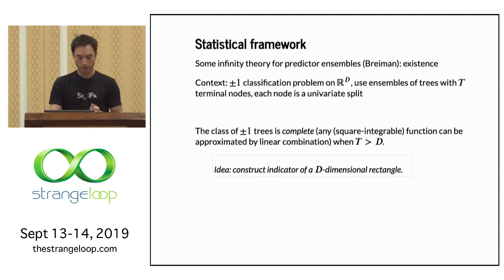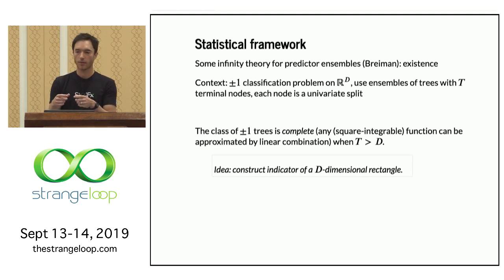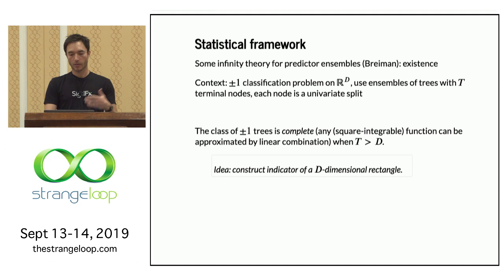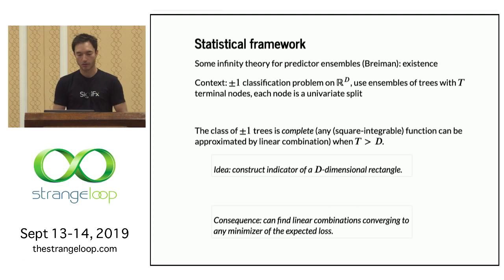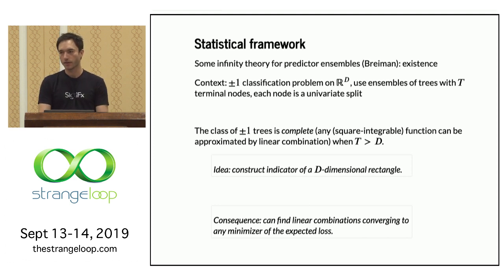The main idea of the proof is to construct an indicator function for a D-dimensional rectangle — a function which is one exactly on that rectangle and zero everywhere else. Once you have this, you can approximate any function with respect to the L2 norm. In particular, you can find some linear combination of decision trees that converges to any minimizer of the expected loss function. This is the analog of universal approximation theorems for decision tree ensembles: you can approximate any function with this class, provided you're allowed linear combinations.